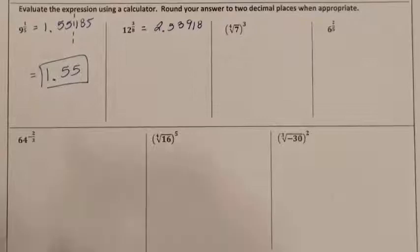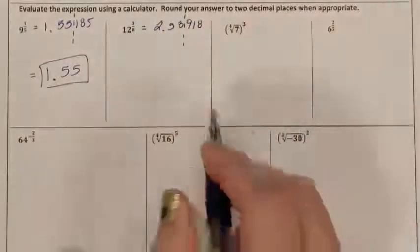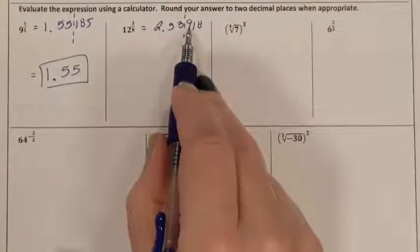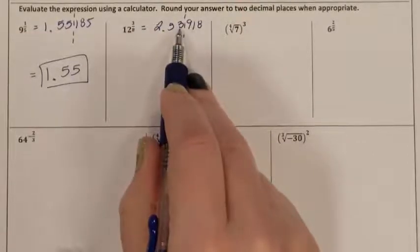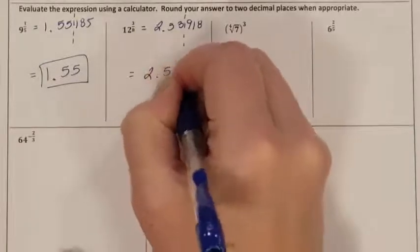This is the decimal my calculator gave me, but I'm supposed to round to two decimal places. So that means I'm cutting it off right here. The first cut-off number, 9, is going to boss the 3 around and tell it to go up one more. So my final answer is 2.54.